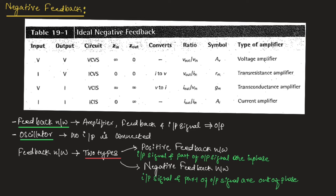If the input is voltage and the output is current, such networks are known as voltage controlled current source (VCCS) networks. Here, both input and output impedance are infinity. Practically, input and output impedance are very high. Since input is voltage and output is current, it converts voltage to current. The gain is written as output current divided by input voltage, represented as Gm.